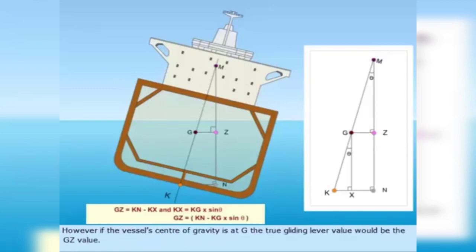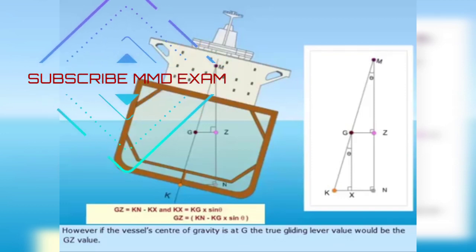However, if the vessel's center of gravity is at G, the true gliding lever value would be the GZ value.